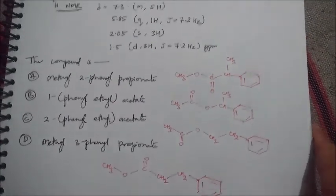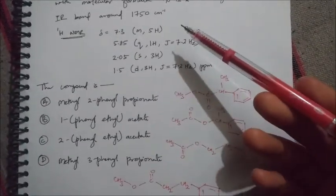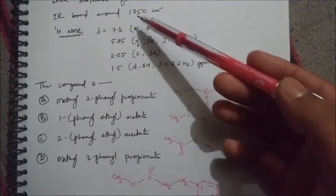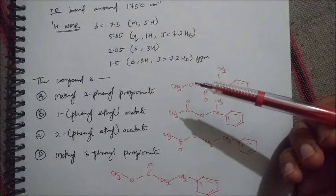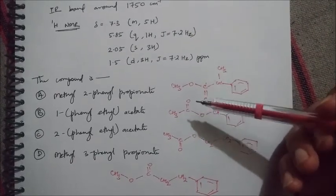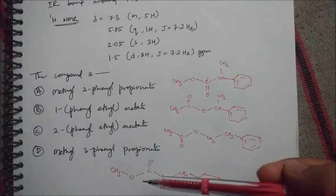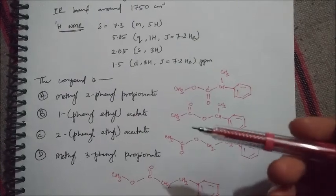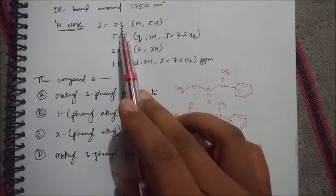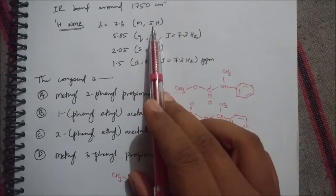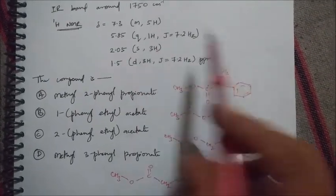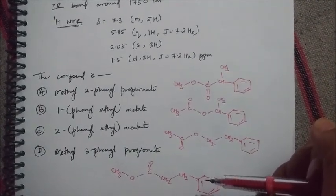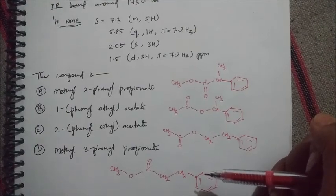Now, according to the spectroscopic data: the IR band at around 1750 cm⁻¹ suggests there is an ester functional group in the compound. All four compounds have an ester group, so this is of no use for differentiating them. The 7.3 ppm multiplet due to 5 hydrogens is due to the presence of a phenyl group, and phenyl is also present in all four compounds, so we don't need to worry about that either.